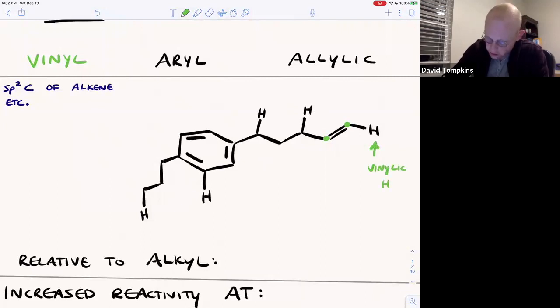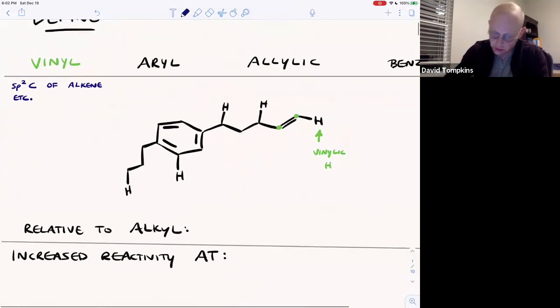Of course there's another vinylic hydrogen at the terminus. I've not drawn all the implicit hydrogens in the structure, you should be able to do that though.